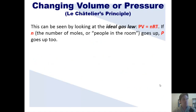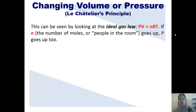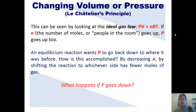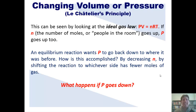This can be seen by looking at the ideal gas law: PV = NRT. If N, the number of moles, goes up, then pressure goes up. An equilibrium reaction wants P to go back down to where it was before. This is accomplished by decreasing N — the number of gas molecules — by shifting the reaction to whichever side has fewer moles of gas. Now, what if P goes down? In that scenario, the equilibrium reaction is going to adjust in whatever way increases P, and that will happen by shifting the reaction in whichever direction has more gas molecules.